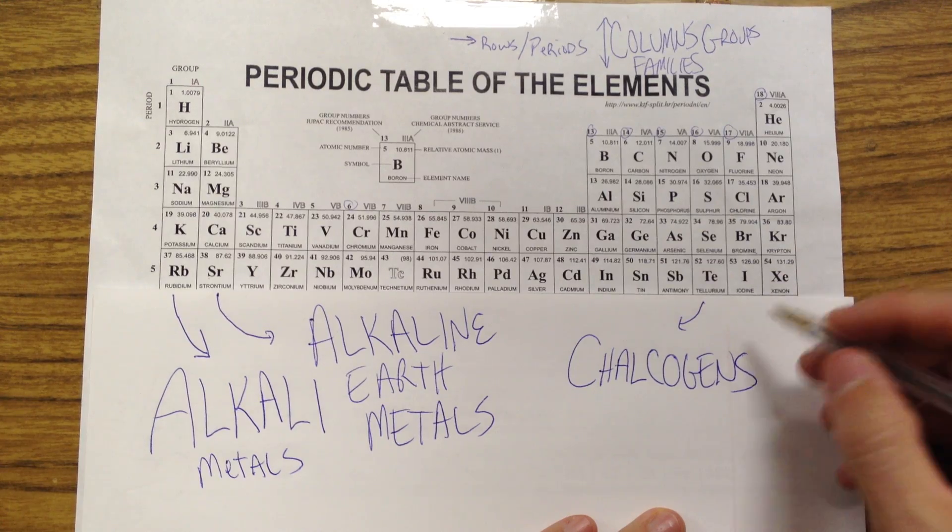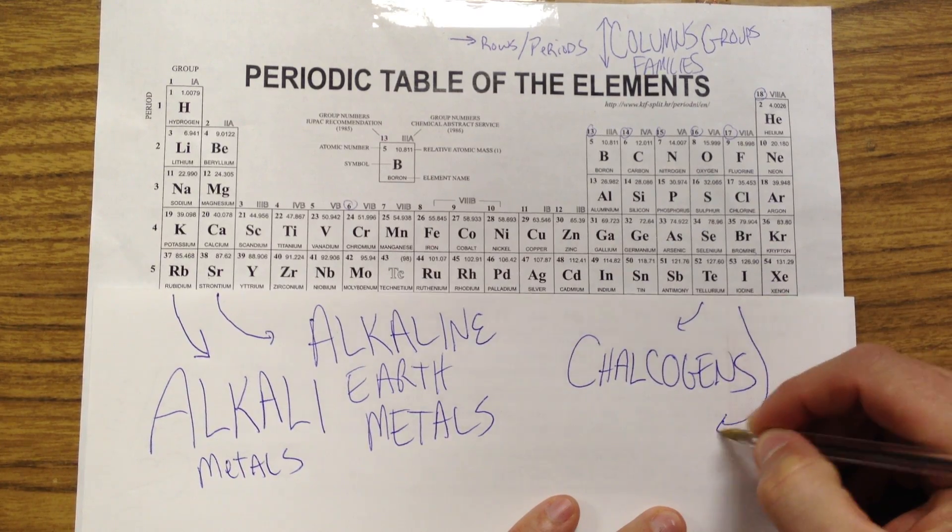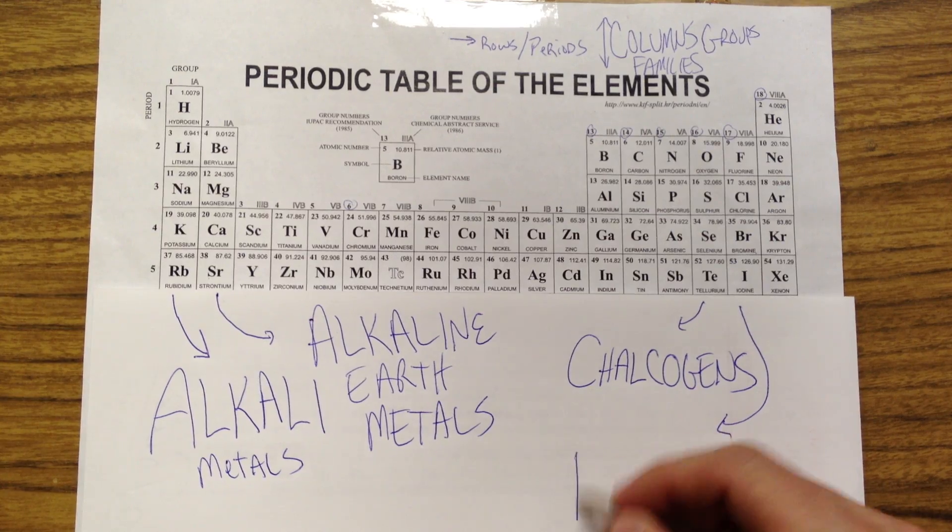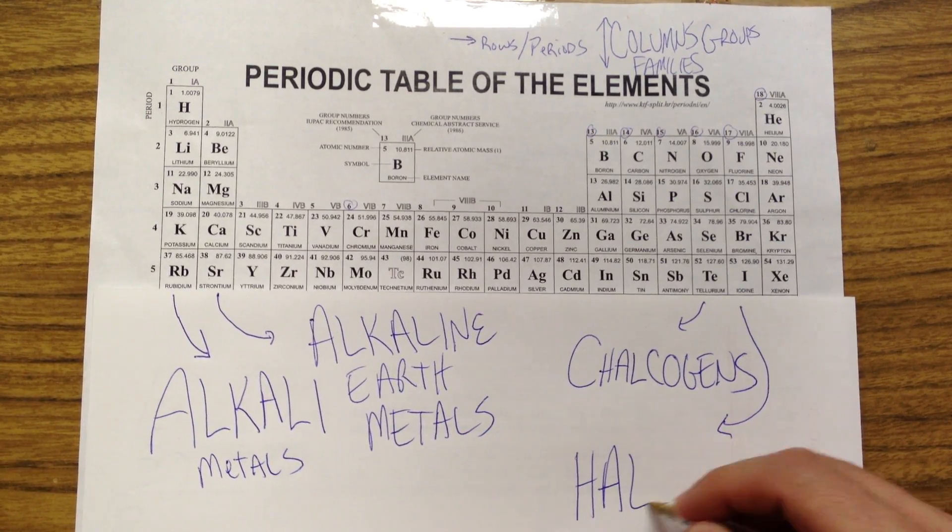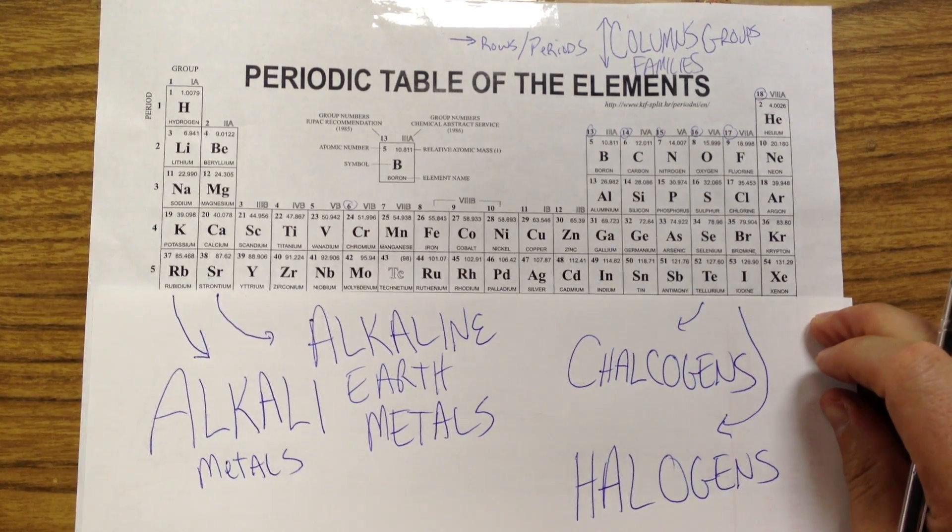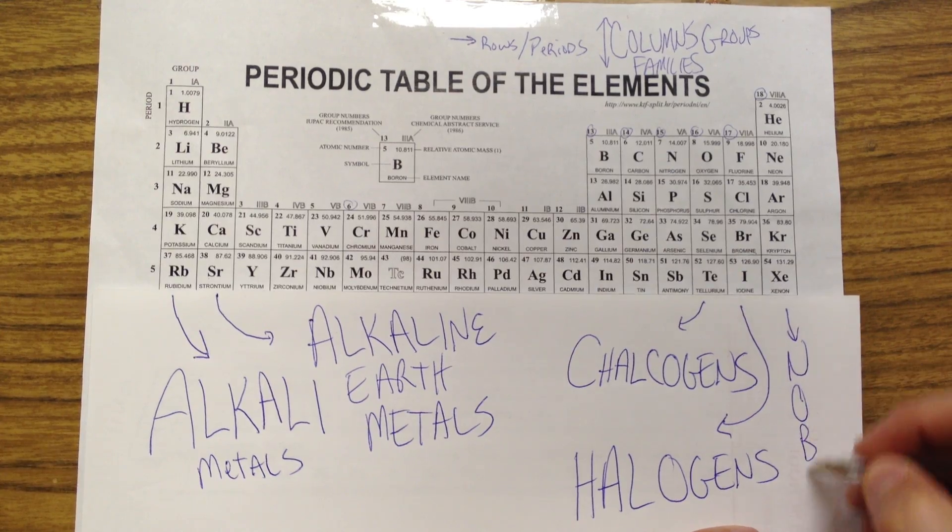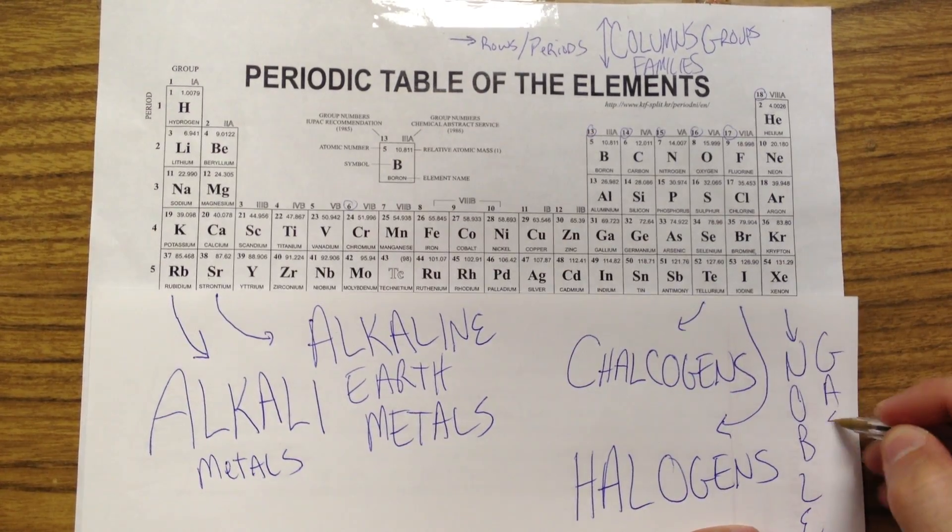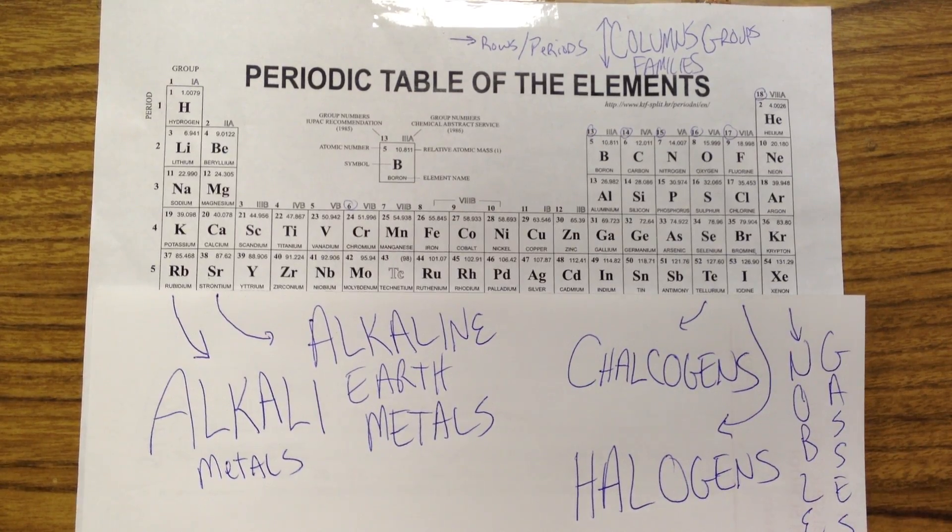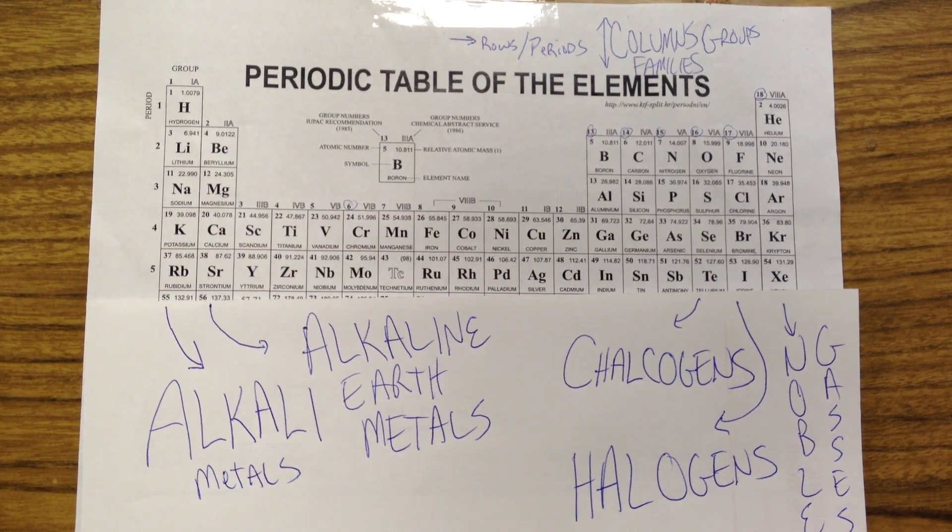Then the group 17, they have their own name as well. These are called, and this is one that comes up a lot, these are called the Halogens. H-A-L-O-G-E-N-S. Fluorine, chlorine, bromine, iodine, that whole group there. And this last group is called the Noble Gases. Sometimes they're referred to as the Inert Gases, I-N-E-R-T, so-called, because they don't really react with anything.